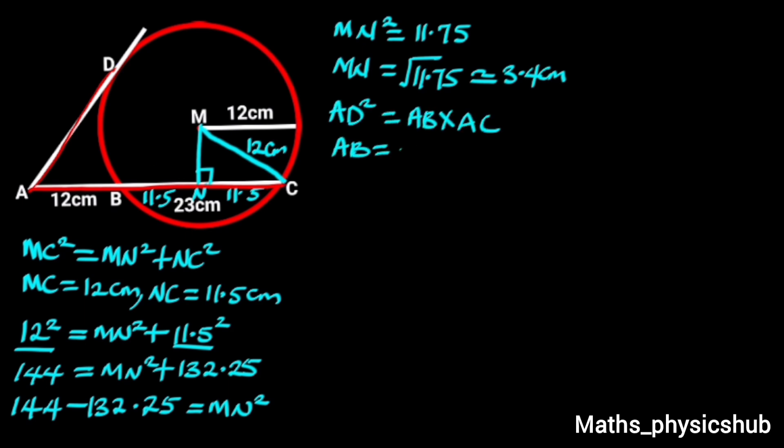Since AB equals 12 centimeters and AC equals 12 plus 23, which is 35 centimeters, substituting these values into this formula, it follows that AD square equals 12 times 35, which is 420.